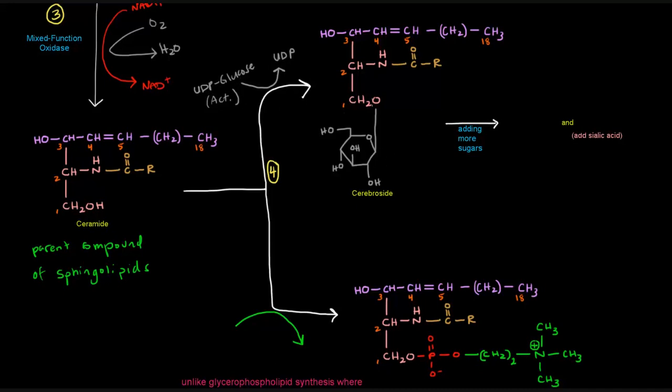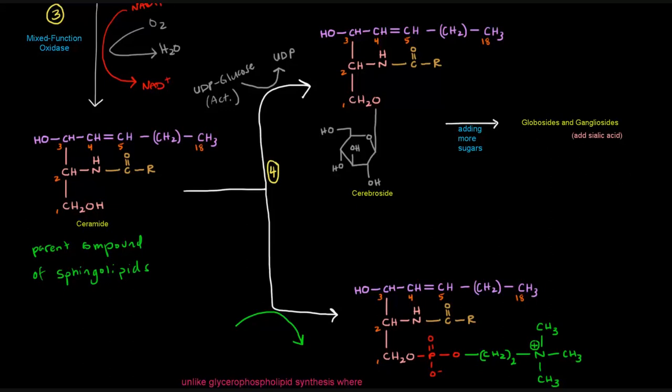Once we create the cerebroside, we can add more sugars to give us globosides. And if we add a sialic acid or even more sugars, we can get gangliosides as well. If you're unfamiliar with these terms or they seem kind of fishy, I would encourage you to go back and watch the sphingolipids portion of the lipids series. Maybe I'll have a link to that somewhere.